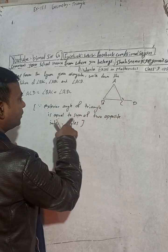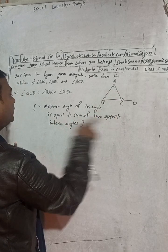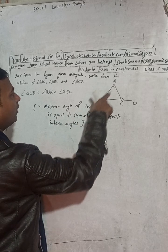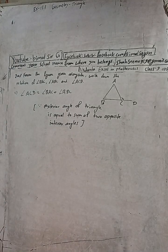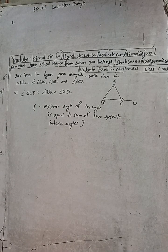This and this are the opposite interior angles, and their sum is equal to this. So this is the solution.